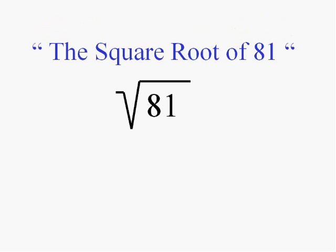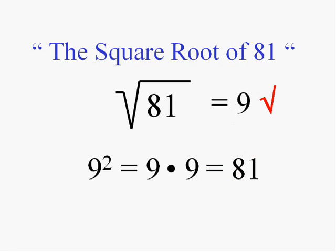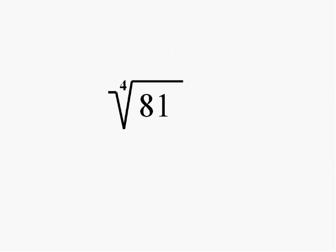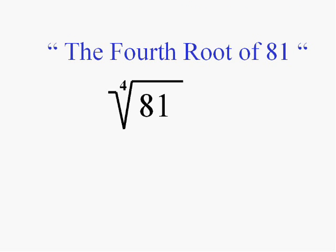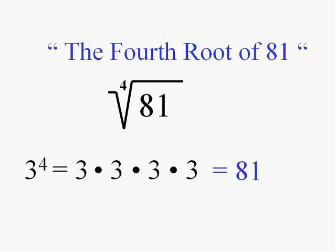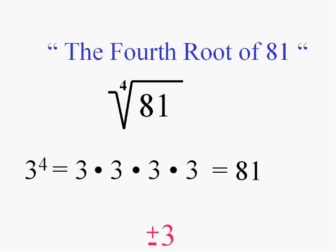We know the square root of 81 is the number squared that equals 81 — it's 9 and negative 9. What about the fourth root of 81? It's not going to be 9. It's going to be the number that you raise to the fourth power to get 81. It's going to be 3, because 3 to the fourth power does equal 81. That's why it's called the fourth root. And actually there are two answers: plus 3 and negative 3, because an even number of negatives gives you a positive answer.